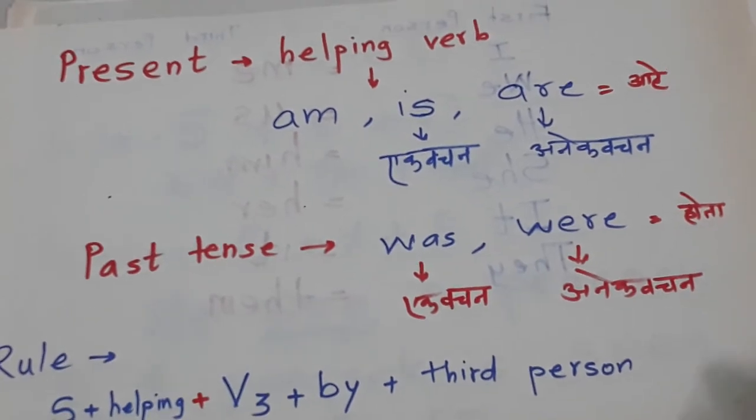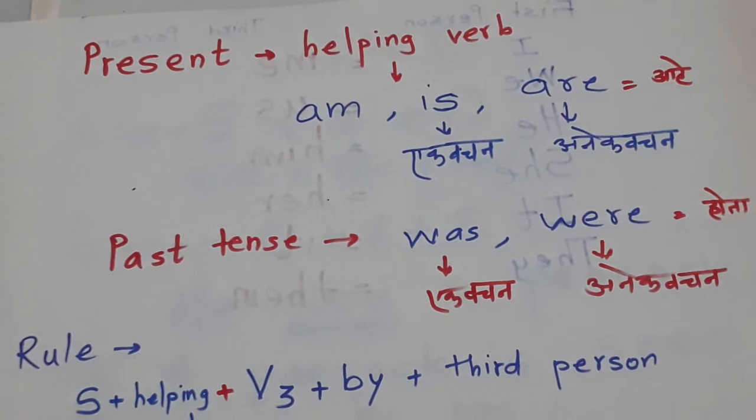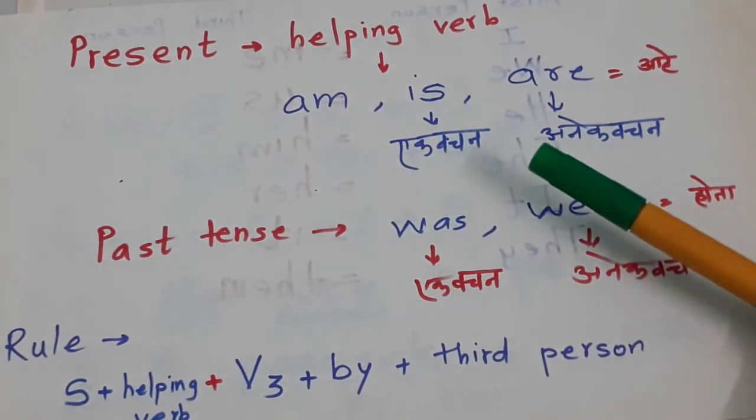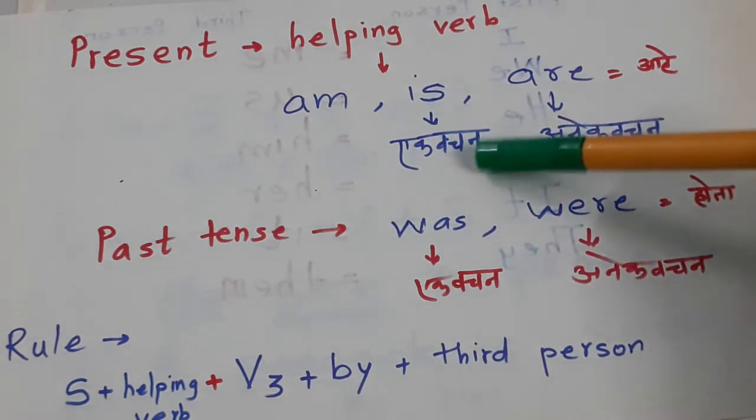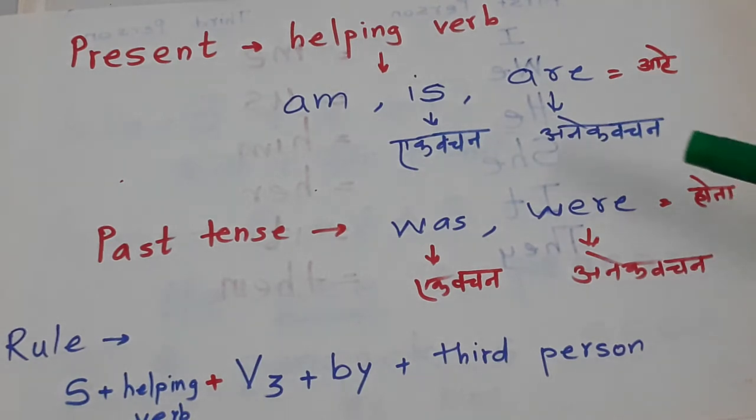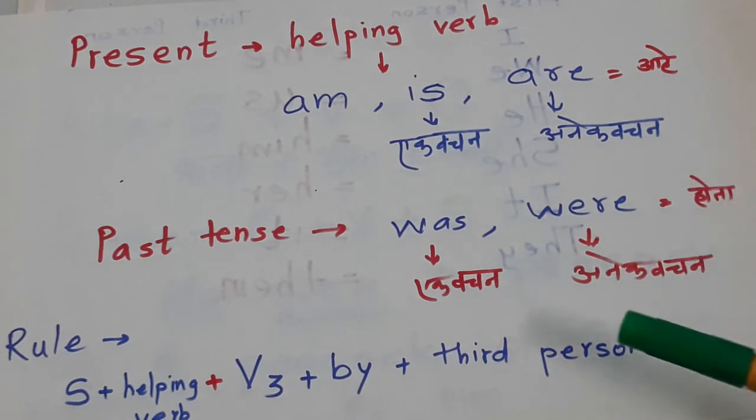Now let's see what helping verb to use. In present tense, the helping verbs I taught you from the beginning are am, is, and are. Is is used for singular, one person. And are is for plural and multiple persons.